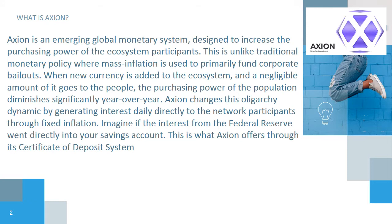This is unlike traditional monetary policy where mass inflation is used to primarily fund corporate bailouts. When new currency is added to the ecosystem, the amount of it that goes to the people is negligible, and the purchasing power of the population diminishes significantly year over year. Axion changes this oligarchy dynamic by generating interest daily directly to the network.